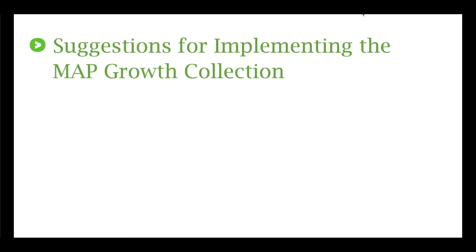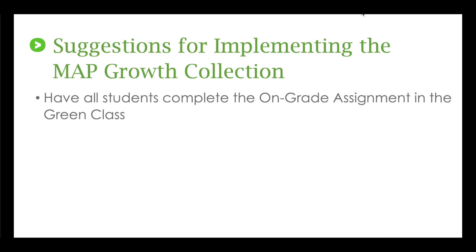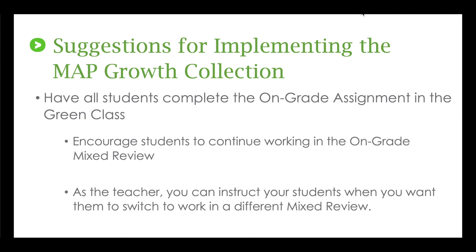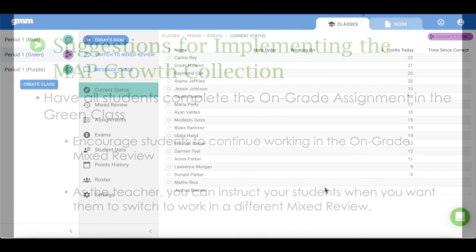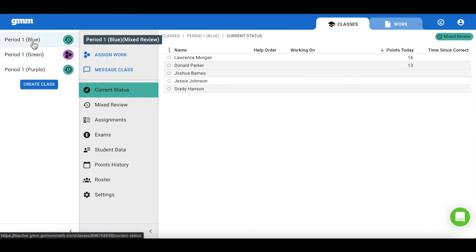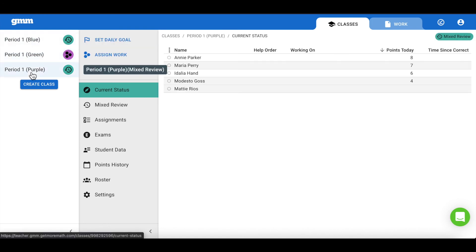Some suggestions for implementing the Map Growth Collection in your classes: we do encourage you to have your students work within that on-grade green class as much as possible, so have all students complete the on-grade assignment in the green class. You should also encourage students to continue working in the on-grade mixed review. As the teacher, you can instruct your students when you want them to switch classes in order to work in a different mixed review. One last reminder: since you have multiple students enrolled in more than one class, it may be necessary to refer back to the blue and the purple class to ensure that your students have met their daily goal.